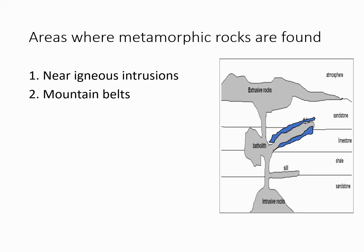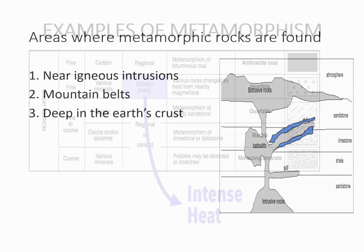In mountain belts, wherever two plates collide with each other and mountains are created, in those regions the agent would be pressure. Deep in the earth's crust, rocks can be metamorphosed due to heat from magma or due to pressure from overlying layers, which converts them into metamorphic rocks.